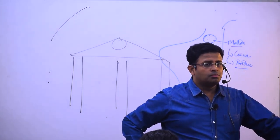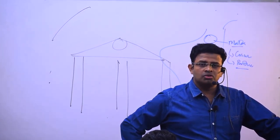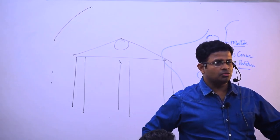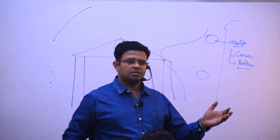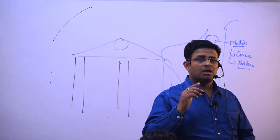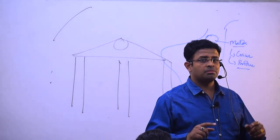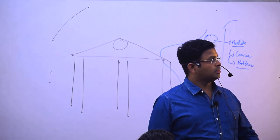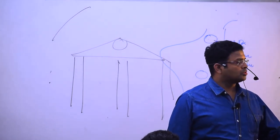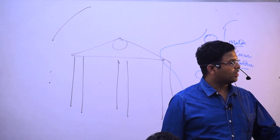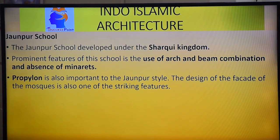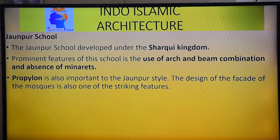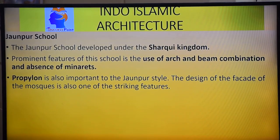The Sharqi Kingdom, they have also utilized propylon. Jaunpur school in Eastern UP, made use of archway as well as trabiated style. When they will be there, higher minarets cannot be developed under the Sharqi Kingdom. And then propylon is also important in Jaunpur, and the design of the facade of the mosque is also one of the striking features. So the entrance of the mosque becomes a striking feature, what is this? Propylon style.